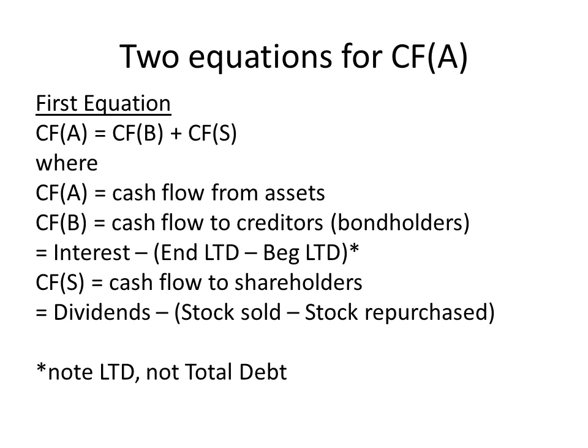In this equation, CFA is equal to cash flow from assets, CFB is equal to cash flow to creditors — the B actually stands for bondholders — and CFS is cash flow to shareholders. What kinds of cash flows go to creditors? First, we pay them interest, and secondly, we have the process of paying off old debt and taking on new debt. Cash flow to creditors is the interest we pay them minus any net new borrowing.